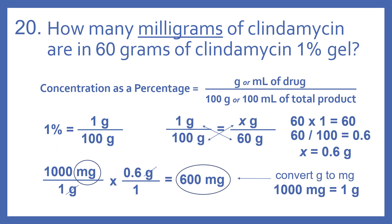So to solve this problem, we need to know what concentration as a percentage means. It means grams or milliliters of a drug per 100 grams or 100 milliliters of a total product. So 1% means that there is 1 gram per 100 grams.